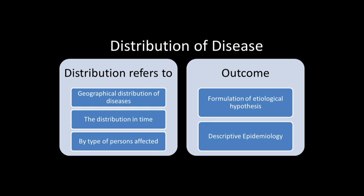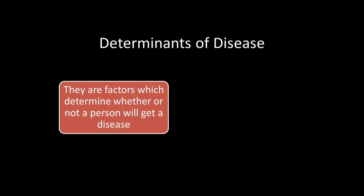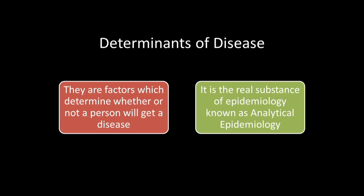All these things can be described by descriptive epidemiology. Next are the determinants of disease. Epidemiologists attempt to search for causes or factors that are associated with increased risk or probability of disease — basically factors which determine whether or not a person will get a disease. This type of epidemiology, where we move from questions of who, what, where and when and start trying to answer how and why, is referred to as analytical epidemiology.